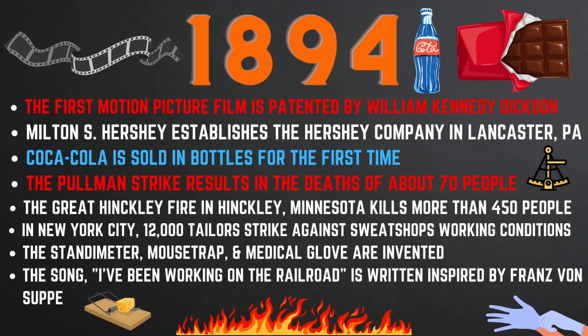Now we will cover the history of the year 1894. In 1894, the first motion picture film is patented by William Kennedy Dixon. Milton S. Hershey establishes the Hershey Company in Lancaster, Pennsylvania, and Coca-Cola is sold in bottles for the first time. The Pullman Strike results in the deaths of about 70 people. The Great Hinckley Fire in Hinckley, Minnesota, kills more than 450 people. In New York City, 12,000 tailors strike against sweatshops' working conditions. The stand-o-meter, the mousetrap, and the medical glove are invented. And the song 'I've Been Working on the Railroad' is written, inspired by Franz von Suppé.